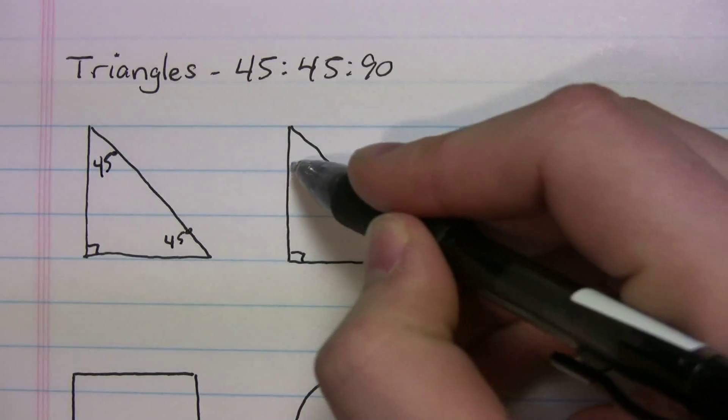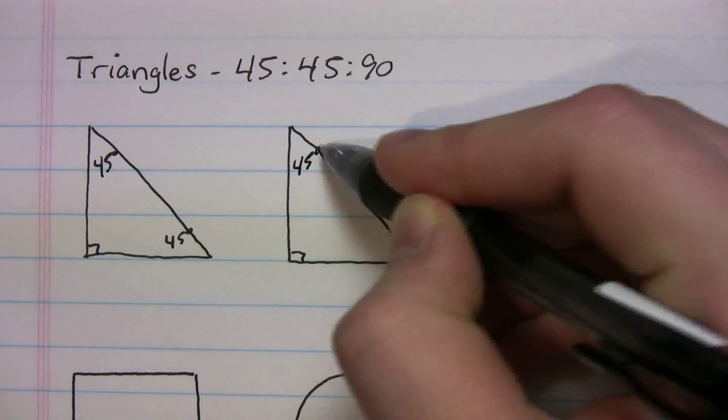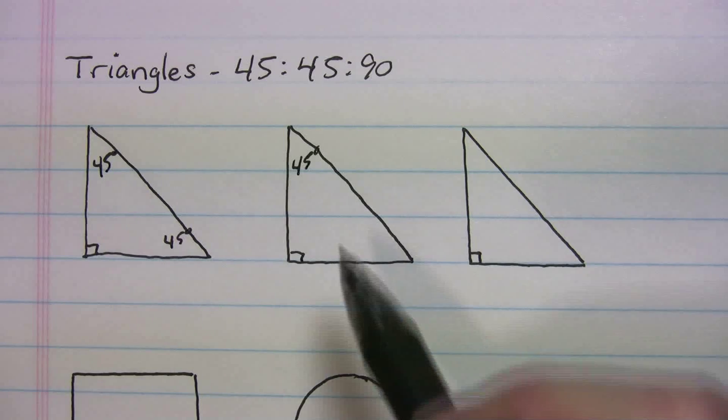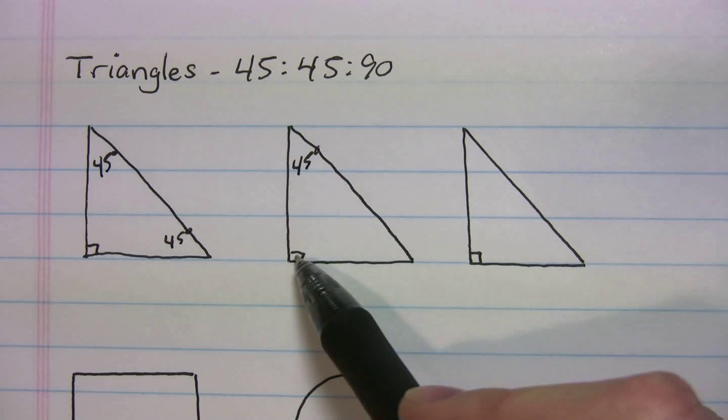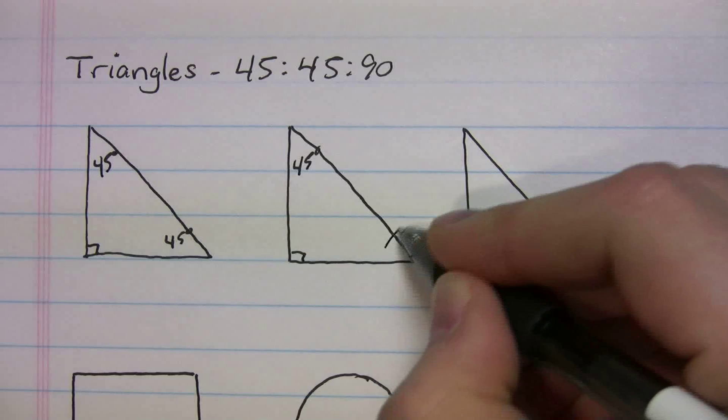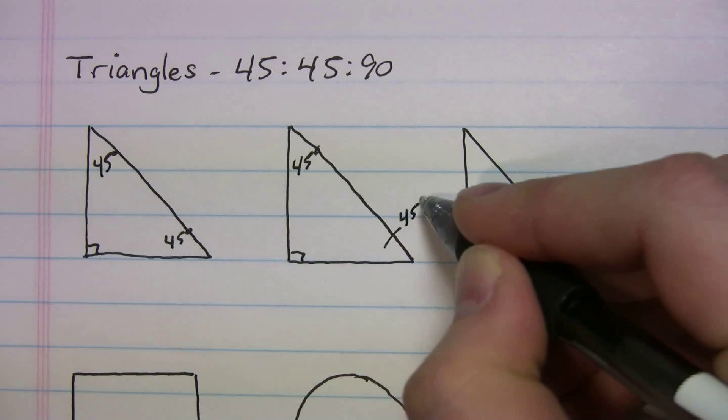Well, a little less apparent, what if they just gave you one of those angles? And if they give you one of them, they tell you that's 45 and this is 90, by default, this has to be 45.